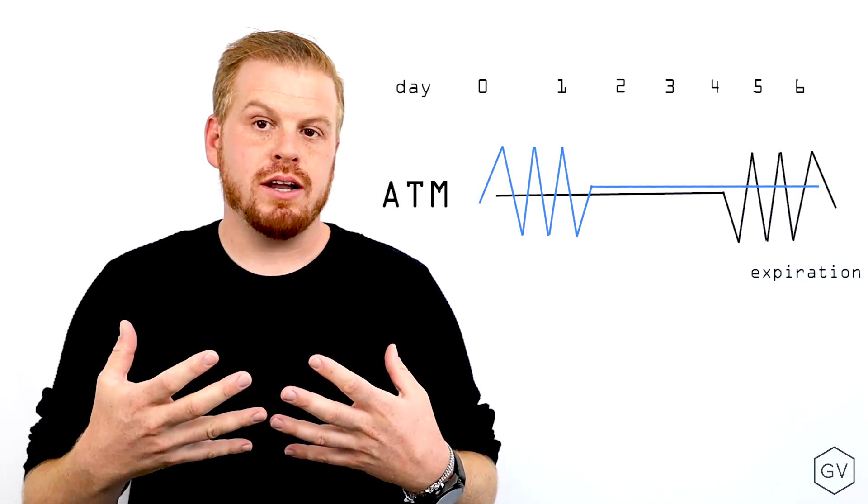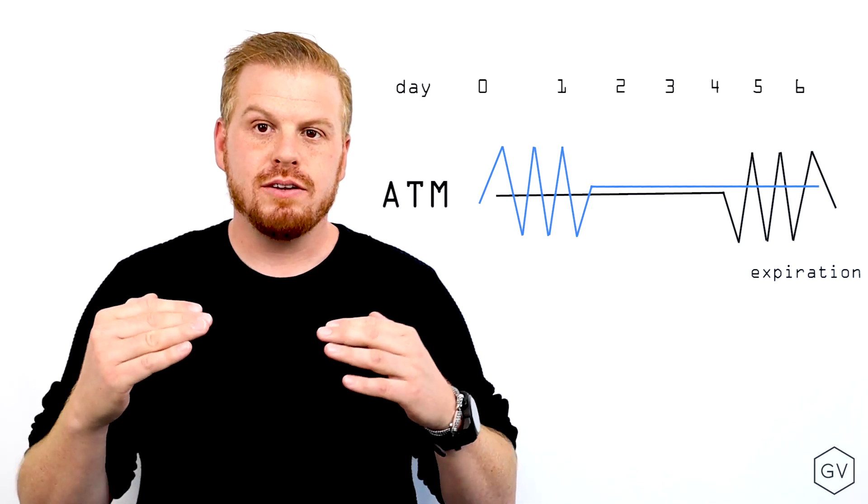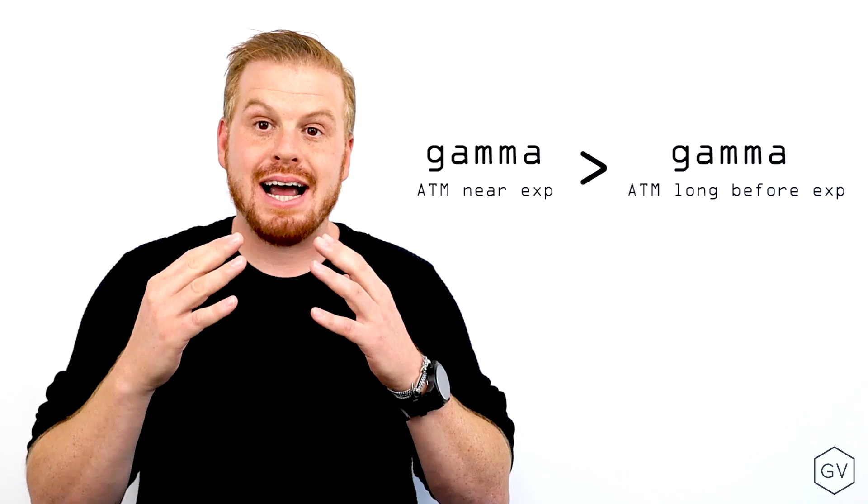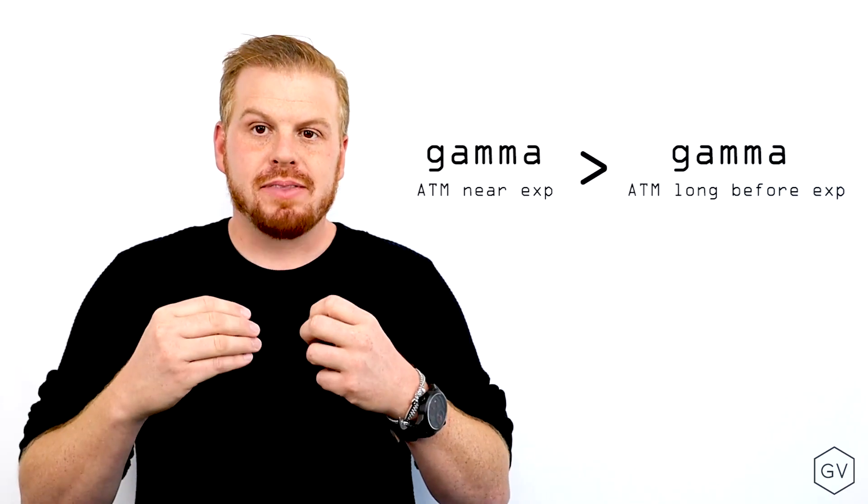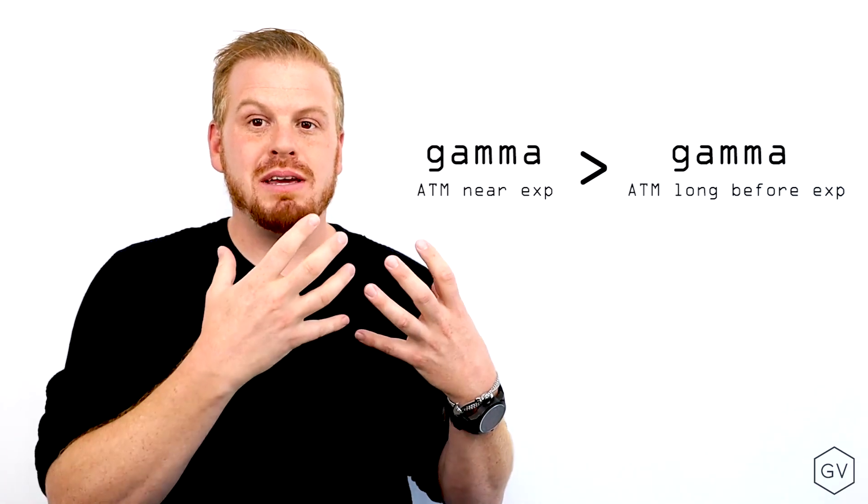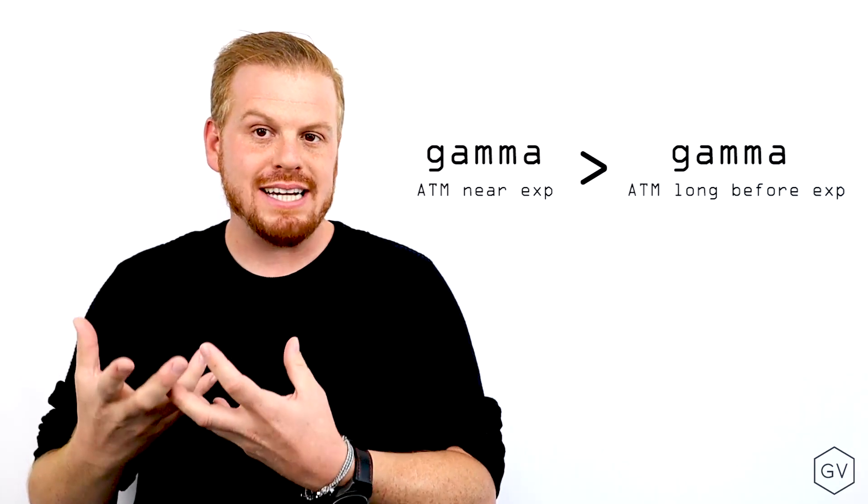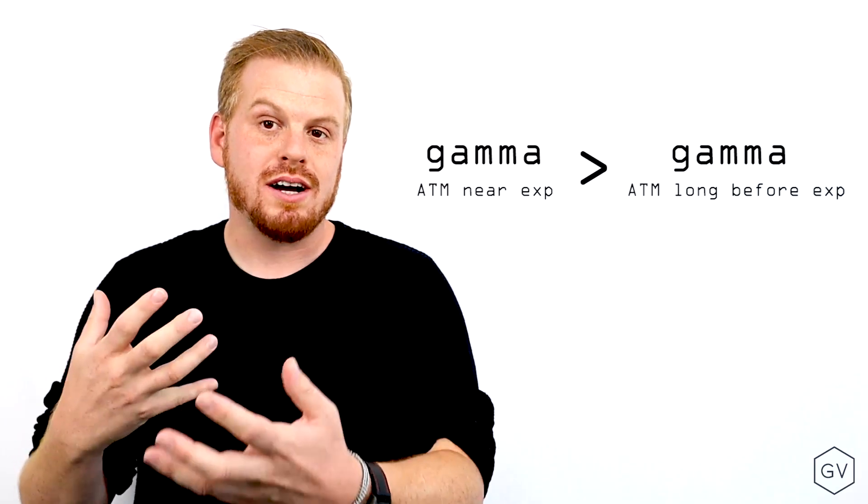But the payouts are going to be a lot different. And the reason why that is is because as time goes by, your gamma profile around at the money becomes bigger. And so if there's less time until expiration and you're scalping around at the money, that's going to be a higher payout than the same type of price action when there's more time until expiration.